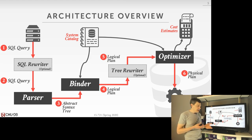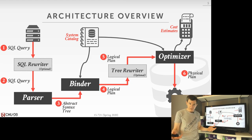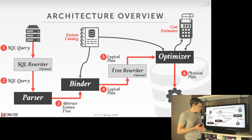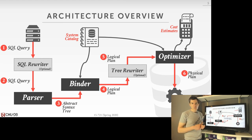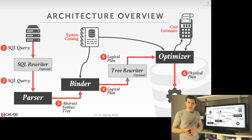The binder then spits out what is called a logical plan — a high-level description of what the query wants to do. For example, if I have a select query that wants to access table foo, the logical plan will say 'scan table foo' without specifying how I want to scan it. Then we take that logical plan and pass it into an optional tree rewriter step — logical plan in, logical plan out.